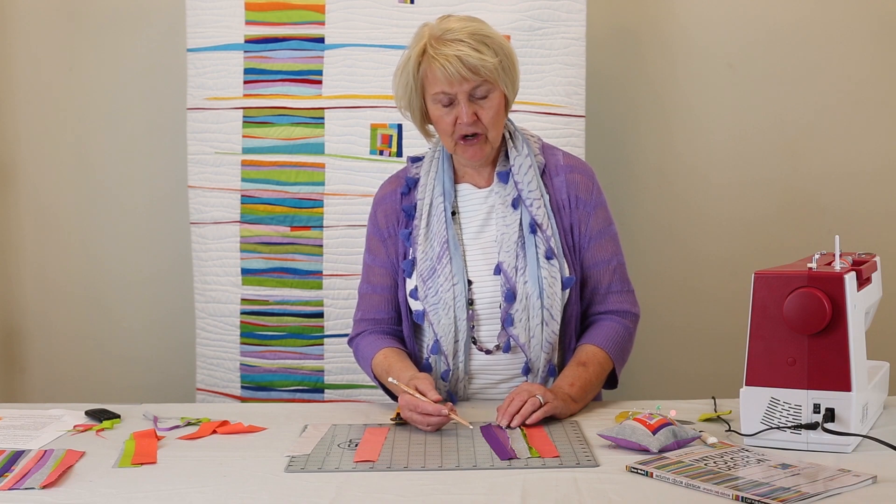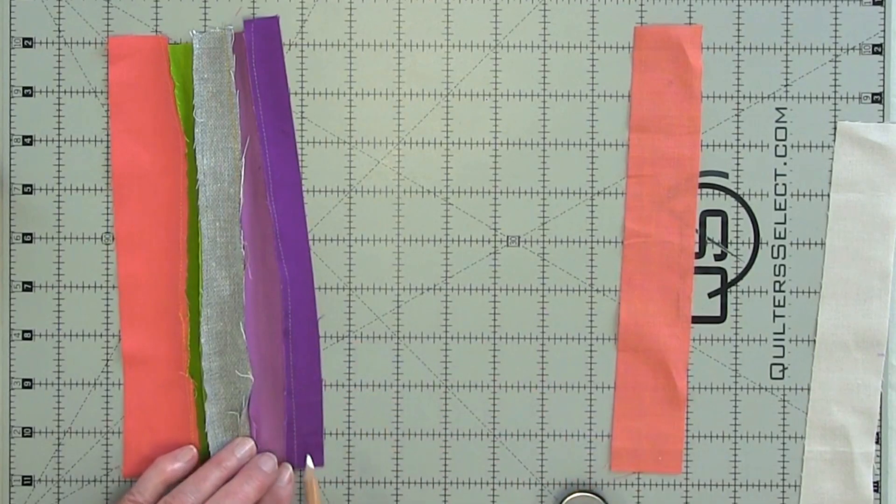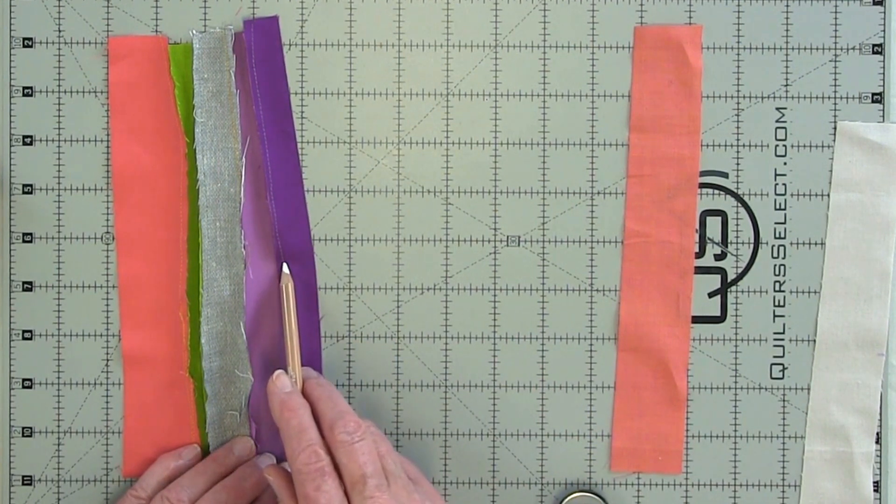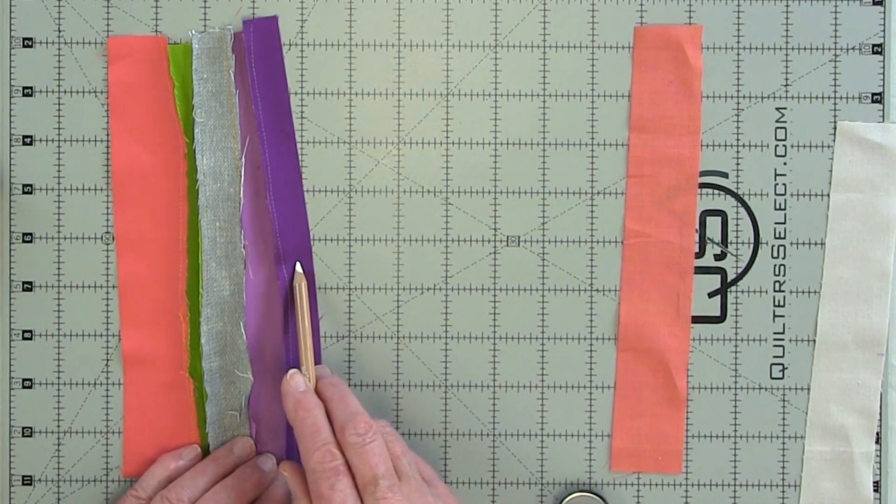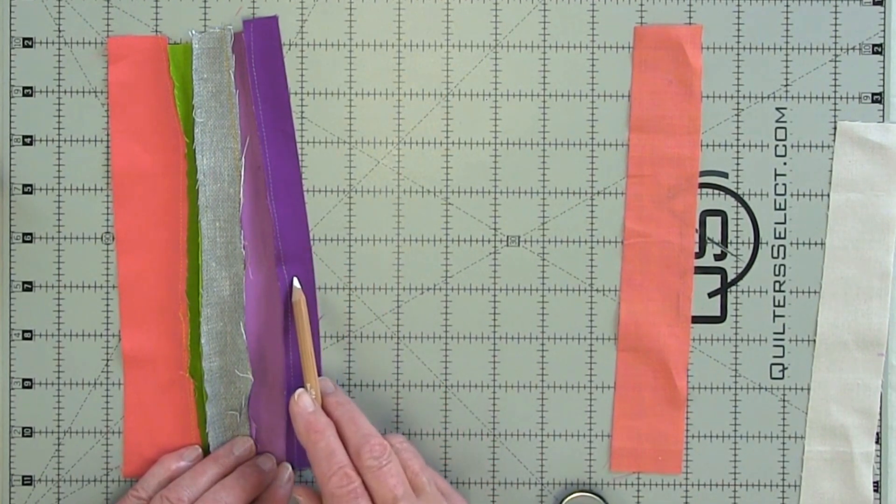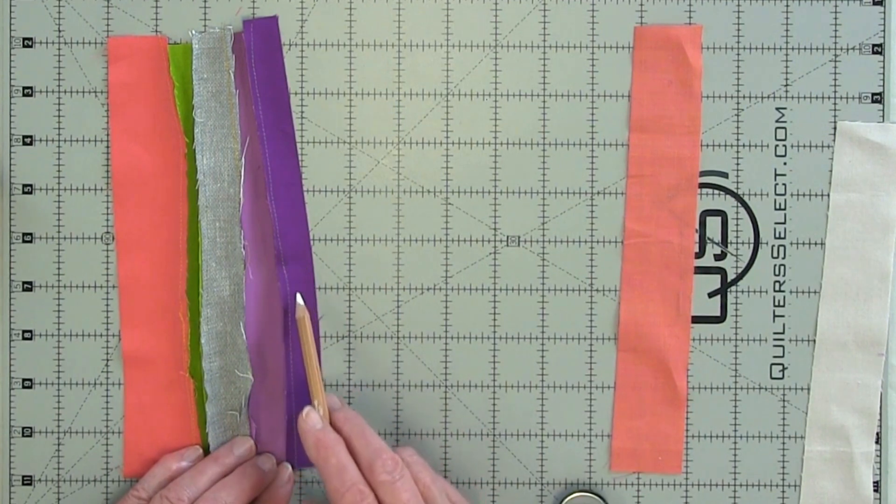I'm going to use a white chalk pencil on this dark color. I think about how far away my seam is going to be from the last seam I sewed. I'm not worrying about this seam allowance over here. So I'm thinking about the narrowness of the seam.